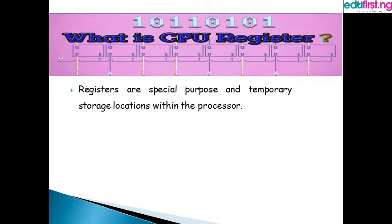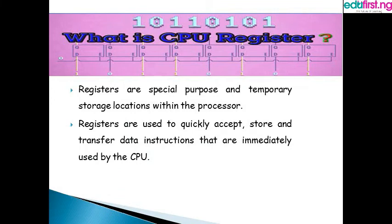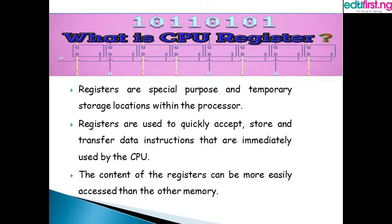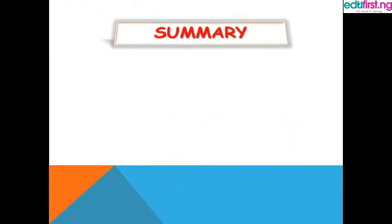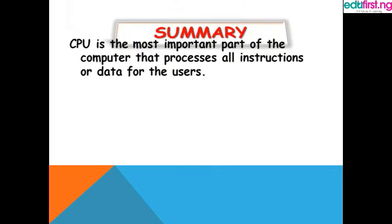The register is meant to speed up the rate of processing. Instead of the processor going to get instructions or addresses for commands from the main memory or secondary storage devices, it can simply pick them from the register and work on it. So registers are used to quickly accept, store, and transfer data and instructions that are immediately used by the CPU, and the contents of the registers can be more easily accessed than other memory.